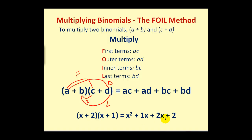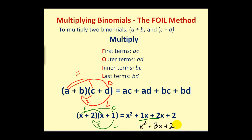Here's another example. X times X would be the first terms. X times 1 would be the outer terms. 2 times X would be the inner terms. And 2 times 1 would be the last terms, which simplifies to X squared plus 3X plus 2. That's FOIL.